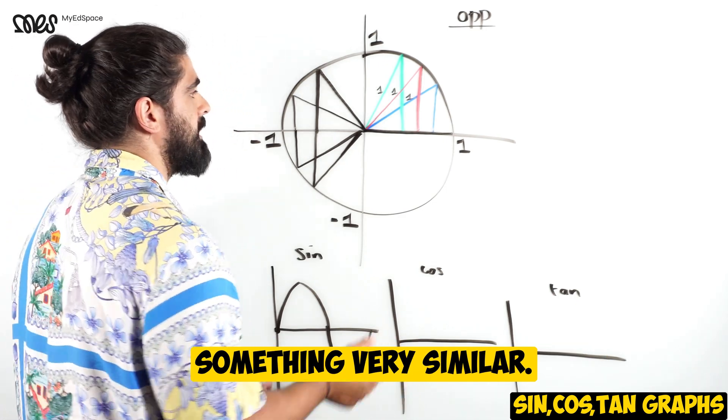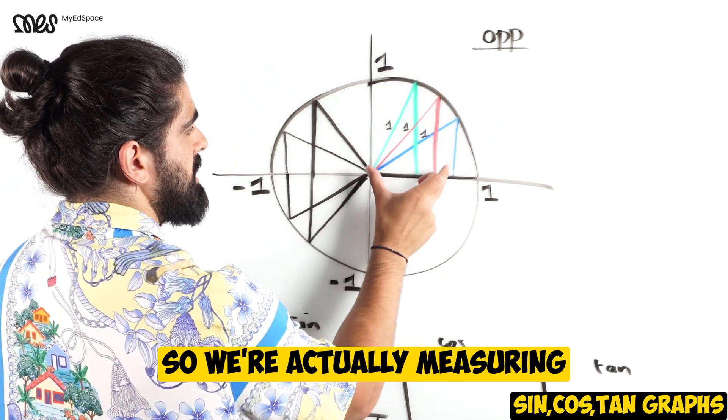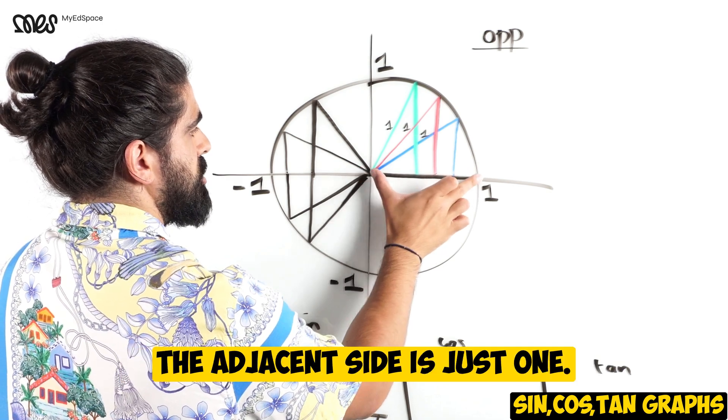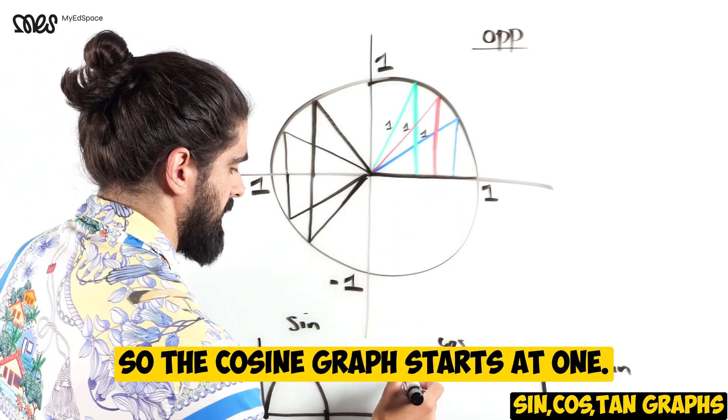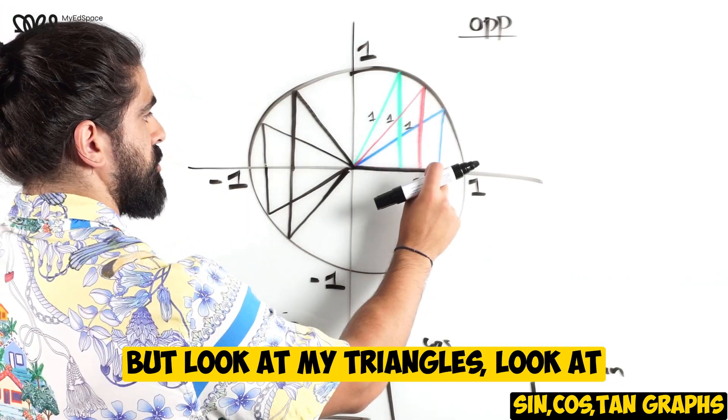Now how does it work for cosine? Something very similar. But cosine was the adjacent over the hypotenuse. So we're actually measuring the adjacent side. Now over here when theta is zero, the adjacent side is just one. So the cosine graph starts at one.